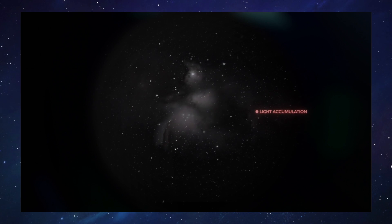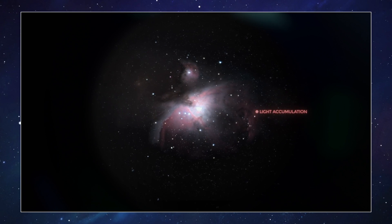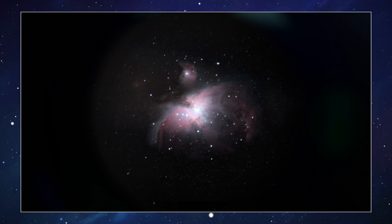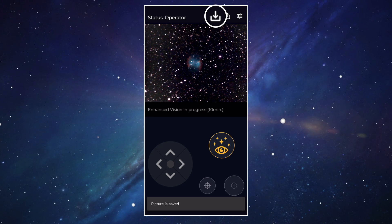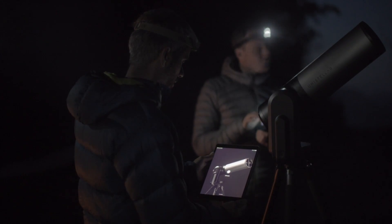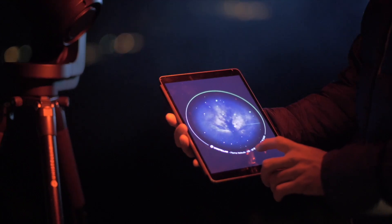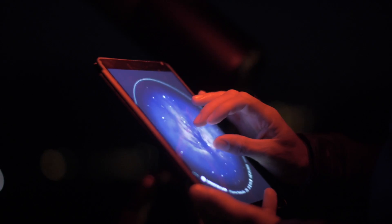Once it's locked onto the object, activate the enhanced vision and the EVscope 2 will reveal details and colours in a few seconds. Save your images or live stream your device to share with friends. Up to 10 observers can connect to the EVscope 2 at the same time so that you can spend wonderful evenings watching the night sky objects with your family and friends.